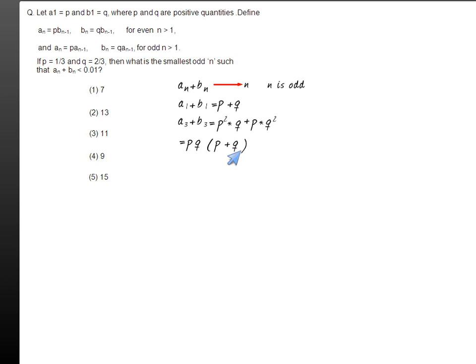a_5 plus b_5 is equal to p to the fourth q plus p q to the fourth, or this could also be written as pq squared into p plus q. So it goes on this way. So if I am talking about a_n plus b_n where n is odd, it would be of the form pq to the power n minus 1 by 2, into p plus q.